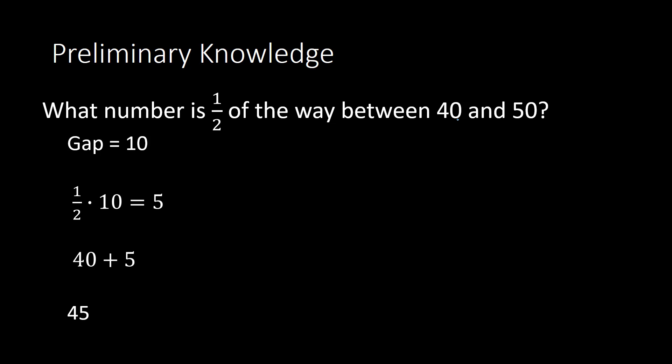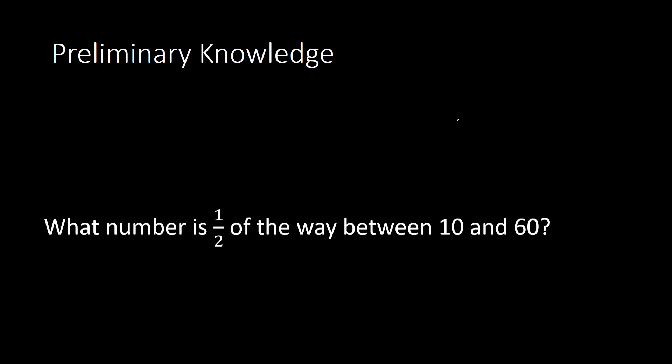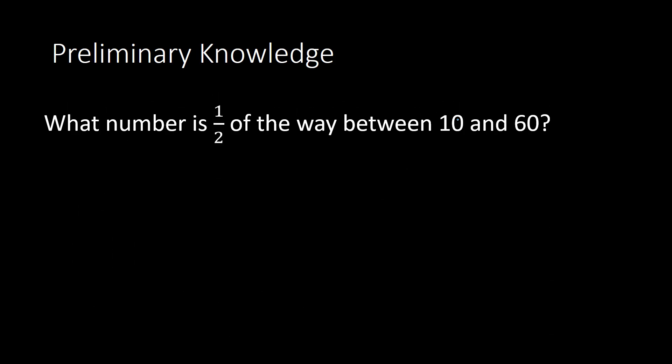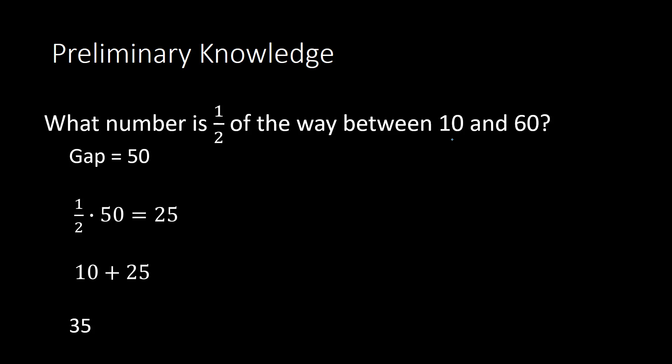This one was pretty obvious, but I'm going to show you more examples where it increases in difficulty. The next one is: what number is one half of the way between 10 and 60? Finding the gap: 60 minus 10 equals 50. What is one half of that gap? One half times 50 is 25, and that is what I add to the first number, 10. So 10 plus 25 is 35, and that is my solution — one half of the way between 10 and 60.